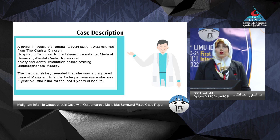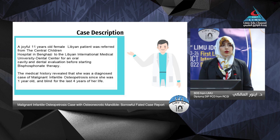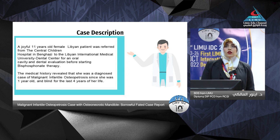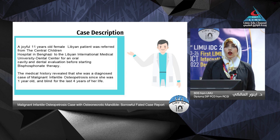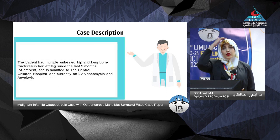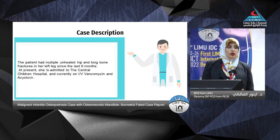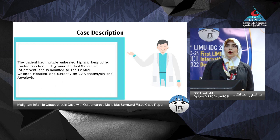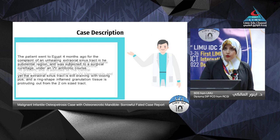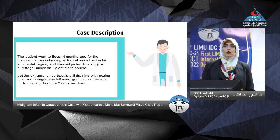Case description: an 11-year-old female Libyan patient, referred from Central Children's Hospital to a dental clinic. Medical history revealed she was diagnosed with malignant infantile osteopetrosis at age one and became blind at age four. The patient had multiple unhealed hip and long bone fractures, was wheelchair-bound, and had a fracture that had not healed for 9 months. She was currently admitted to the central hospital and receiving IV vancomycin and acyclovir.